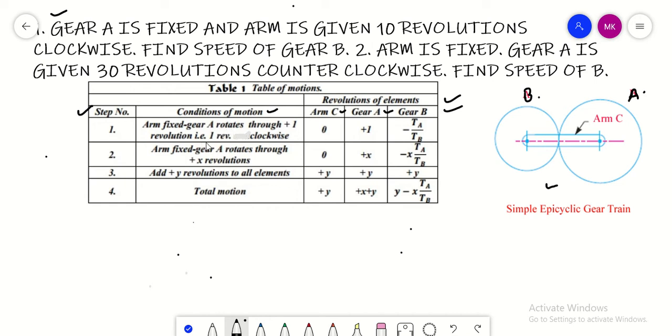One revolution clockwise, so it is plus one. Here minus means it is basically a sign convention. Clockwise is positive, counterclockwise is negative.